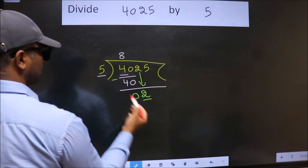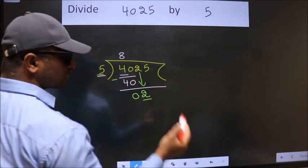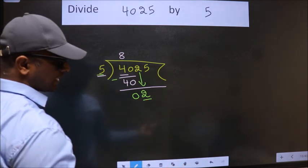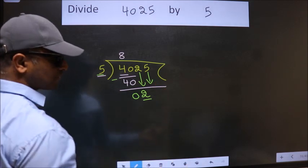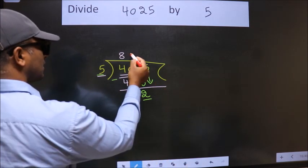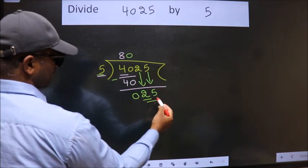Now here we have 2, here 5. 2 is smaller than 5, so we should bring down the second number. And the rule to bring down the second number is, put 0 here. Then only we can bring down this number. So, 25.